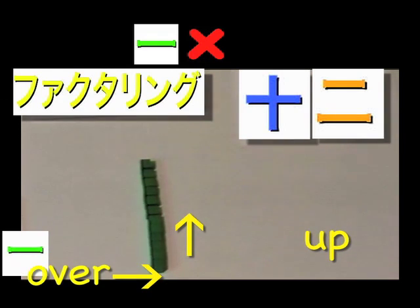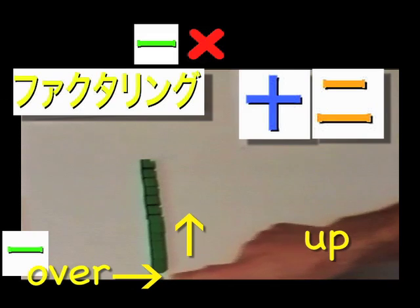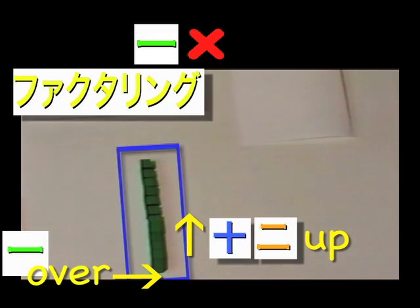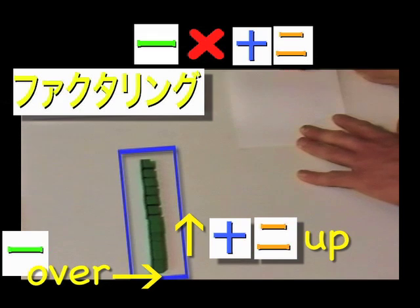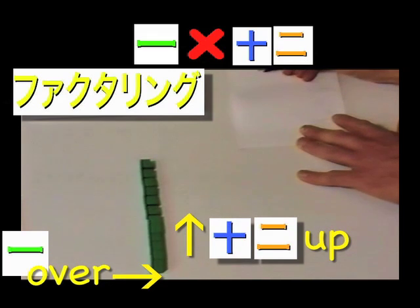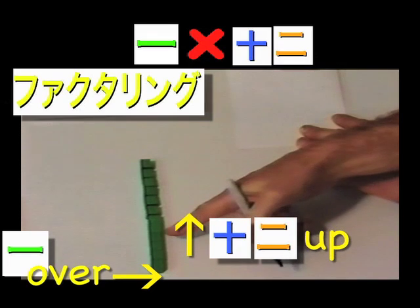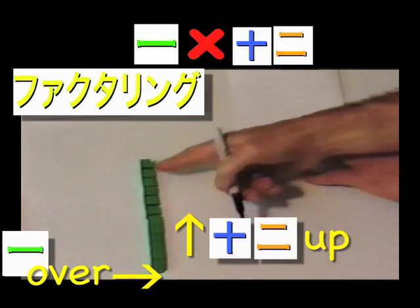Our factors of 12 here are our over distance, 1. Our up distance, 1, 2, 3, 4, 5, 6, 7, 8, 9, 10, 11, 12.